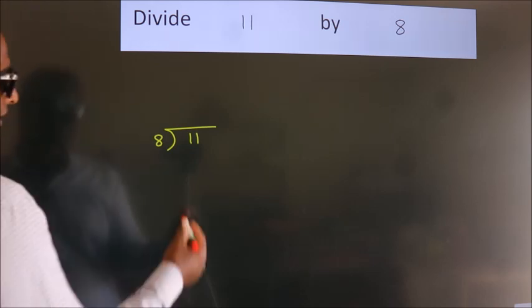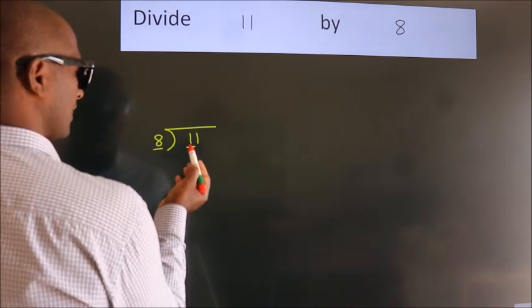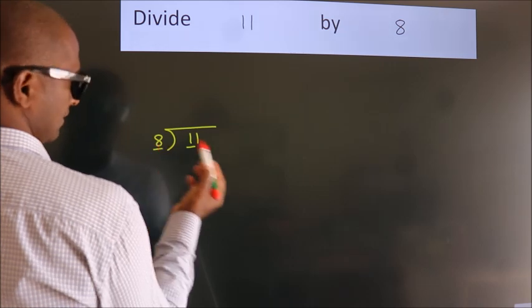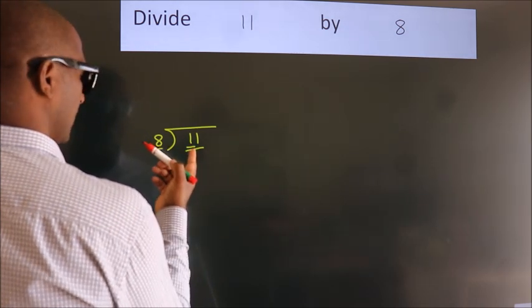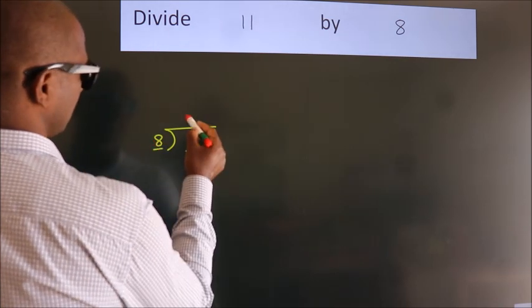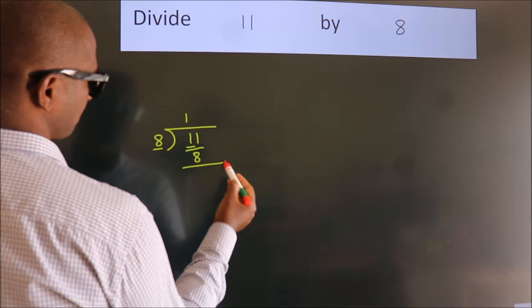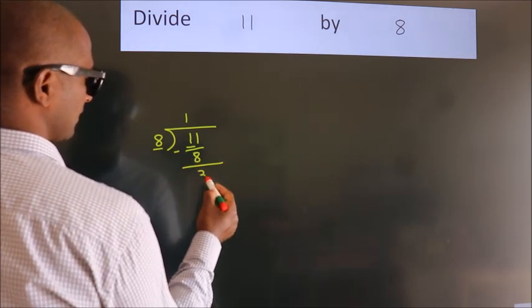Next, here we have 1, here 8. 1 is smaller than 8, so we should take two numbers: 11. A number close to 11 in the 8 table is 8 times 1, which is 8. Now we subtract and get 3.